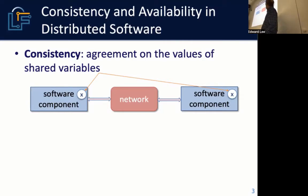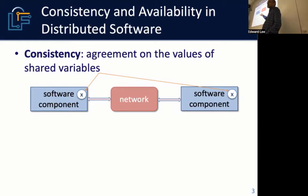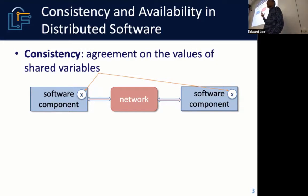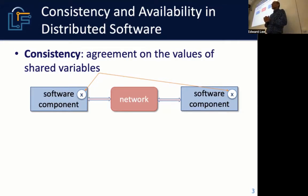Just having a distributed system with a need for availability means you have to do replication. As soon as you do replication, you have a consistency problem, because you could have a situation where two software components disagree about the value of a variable.